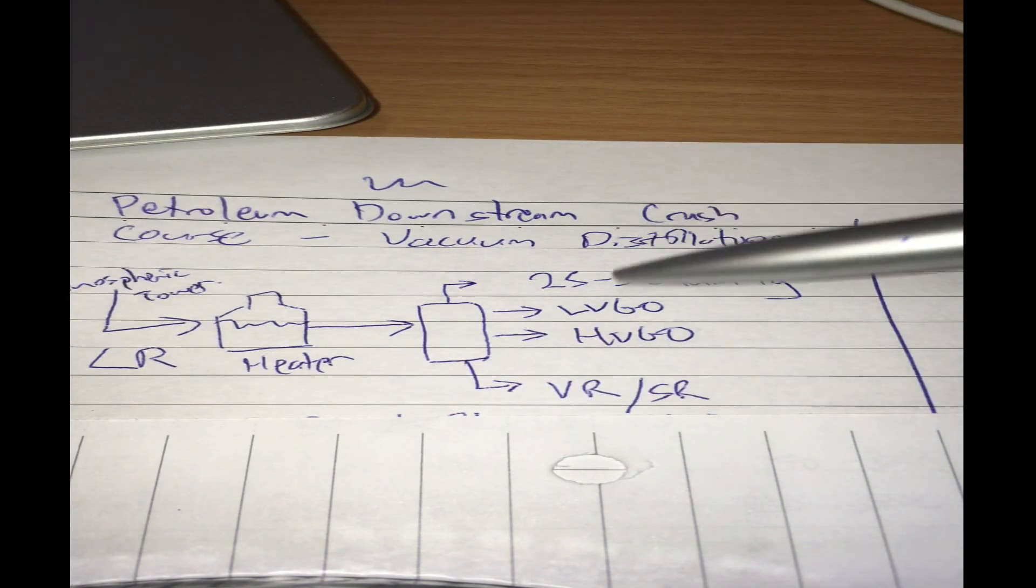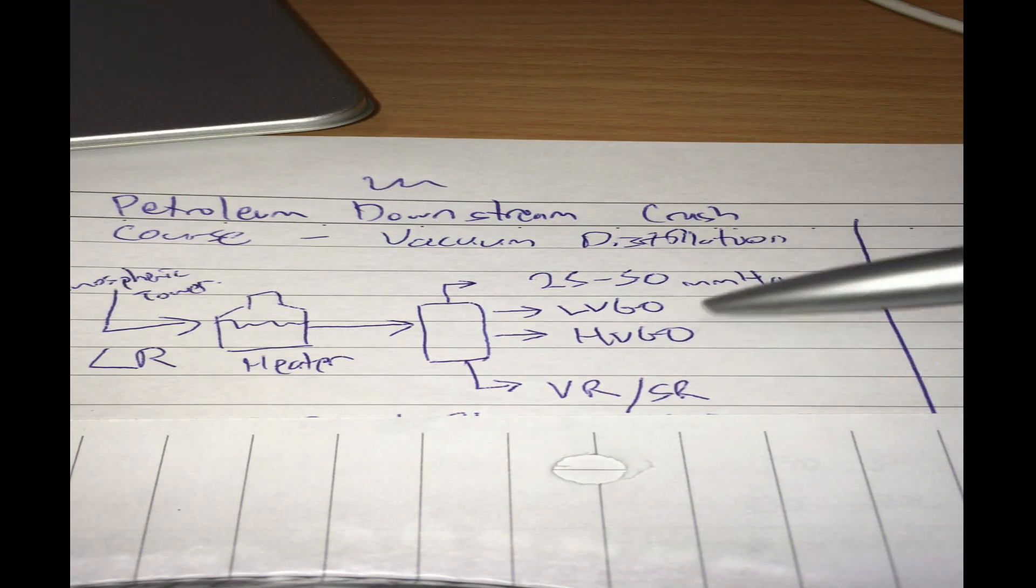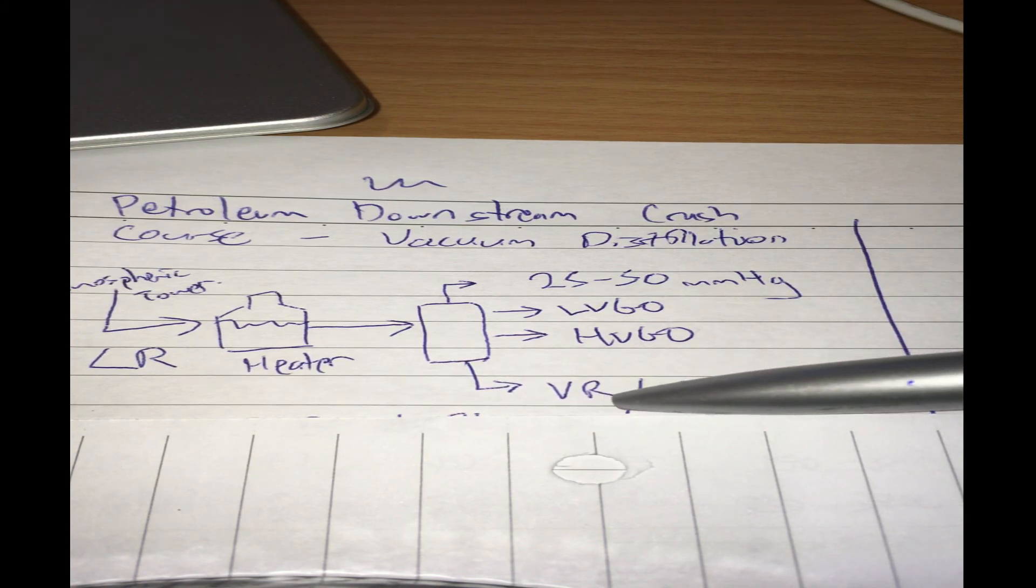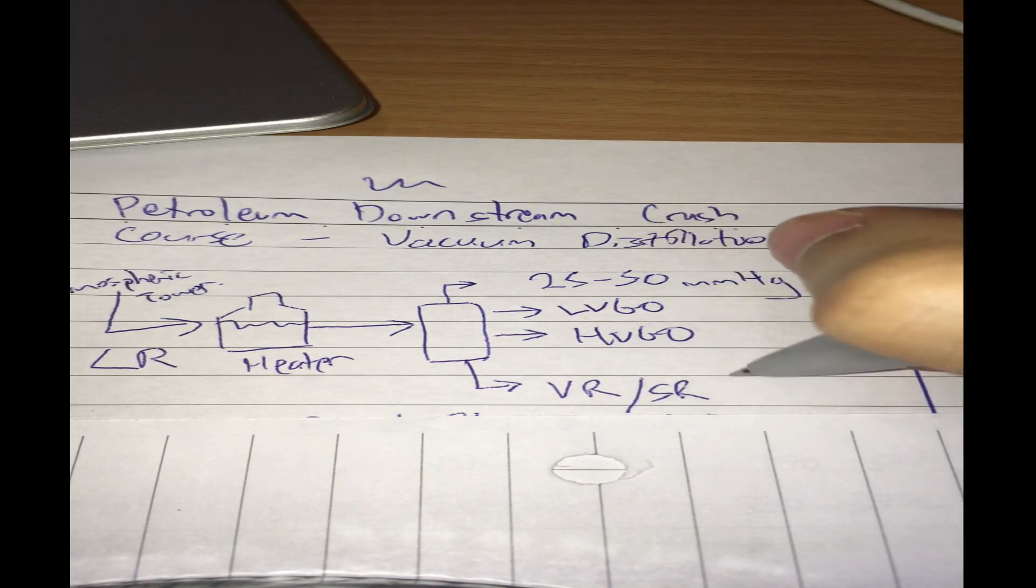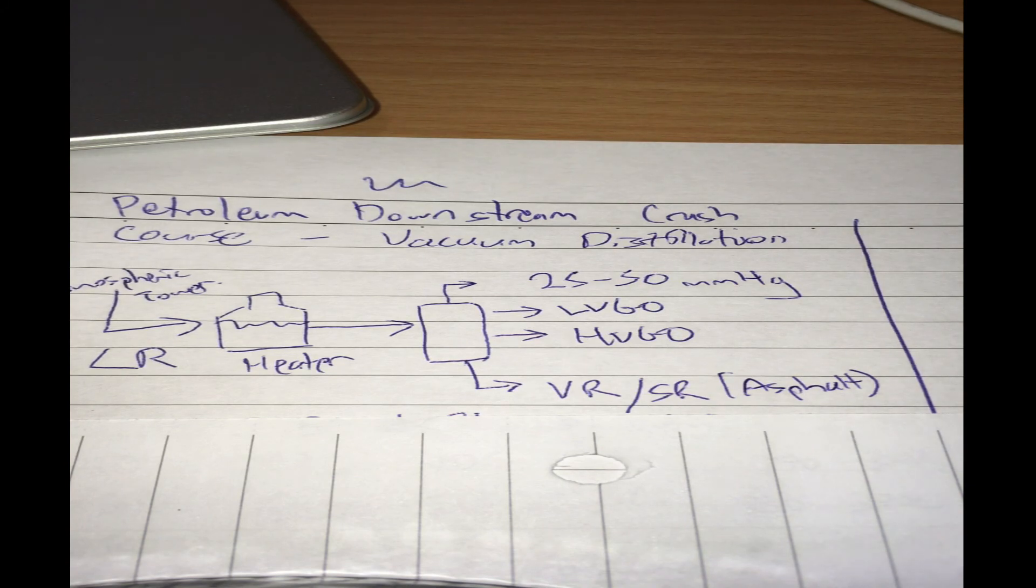You withdraw extra fractions from it. What comes out the bottom after you get out the lighter fractions will be heavy vacuum gas oil and light vacuum gas oil. What comes out the bottom is known as short residue or vacuum residue or vacuum reduced crude, and sometimes they call it asphalt.